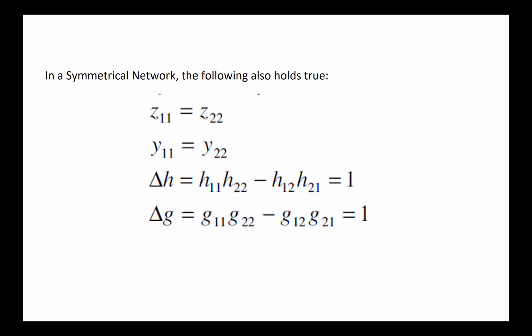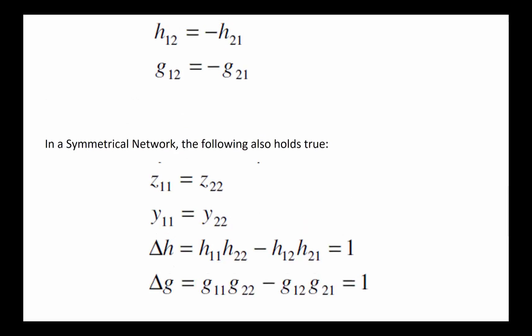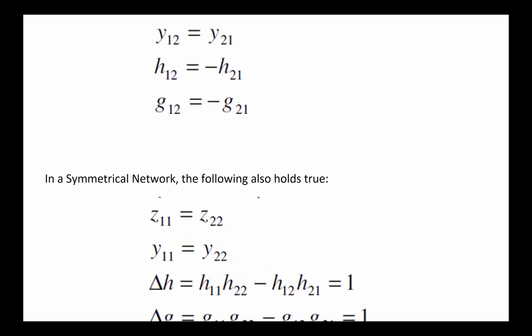For example in the case of a Z network, what's going to happen is that Z11 and Z22 are the same, the diagonals are the same, and then also Z12 and Z21 are the same.